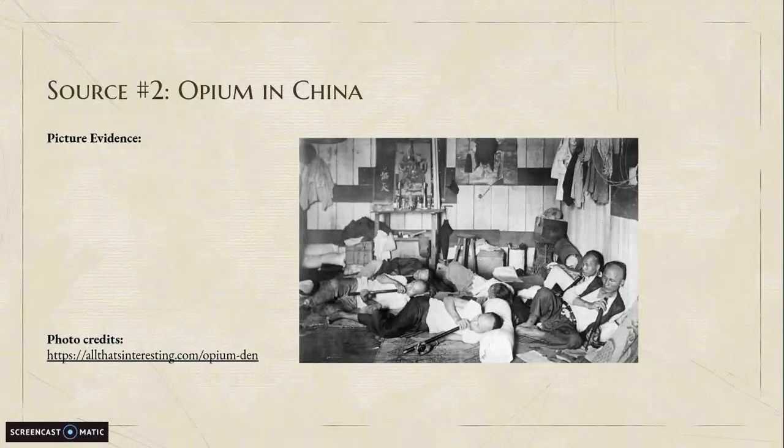The photo depicts the struggles and hardships that the people of China went through during the Opium Wars. Many people struggled with their addiction to the drug after Britain unleashed a flood of opium under their free trade policy. At the end of the 1800s, out of 300 million citizens of China, 90 million were addicted. The people in the photo are Chinese smokers in an opium den.